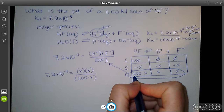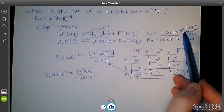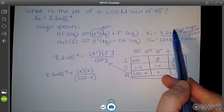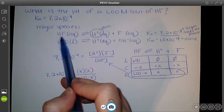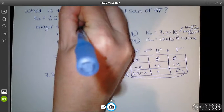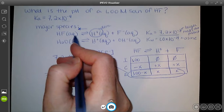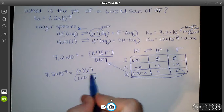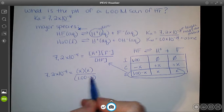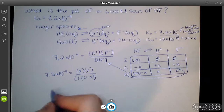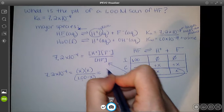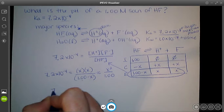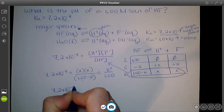Since Ka is still pretty small — 10 to the negative 4 — the acid isn't disassociating much. So the amount subtracted from 1.00 isn't enough to change it significantly, and we approximate 1.00 − x ≈ 1.00. That simplifies our expression to 7.2×10⁻⁴ ≈ x² / 1.00, meaning 7.2×10⁻⁴ = x².